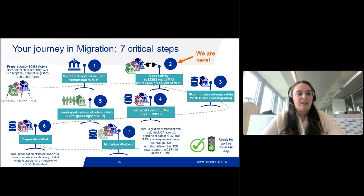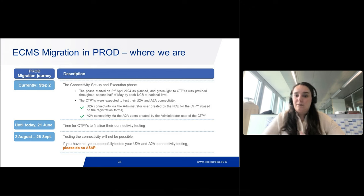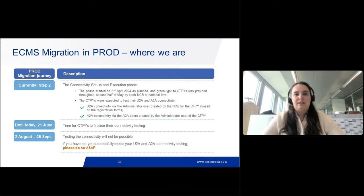We are on step two. The connectivity phase started on the 2nd of April as planned. The green light to counterparties was provided by the NCBs throughout the second half of May, at the national level, depending on when each NCB finished setting up the counterparty. Counterparties were expected to test their U2A and A2A connectivity — the U2A via the administrator user created by the NCB or counterparty, based on information provided in the registration form.